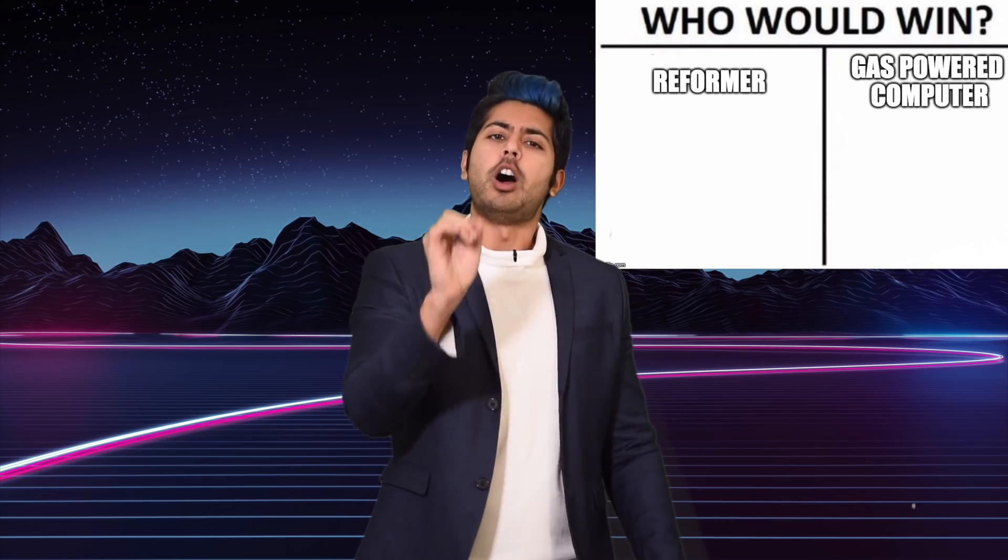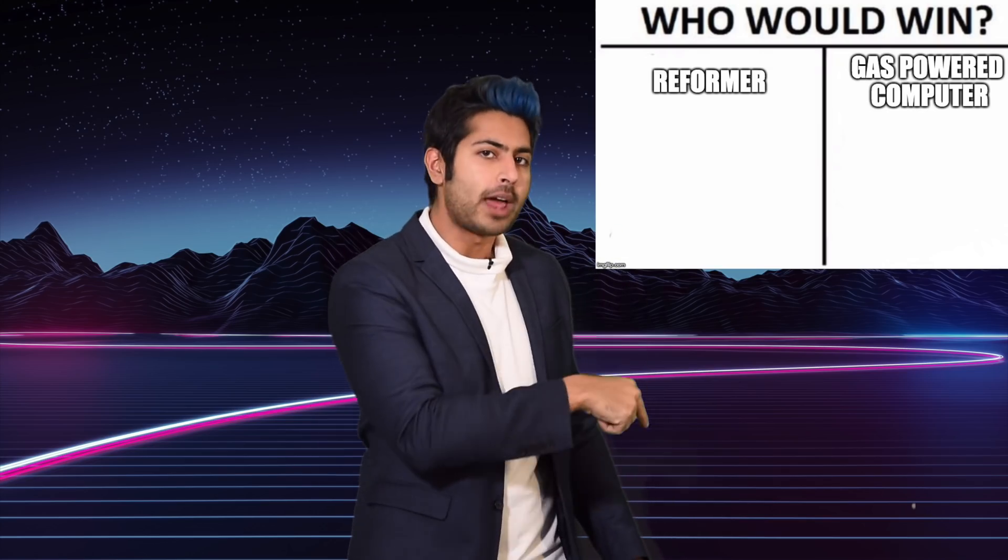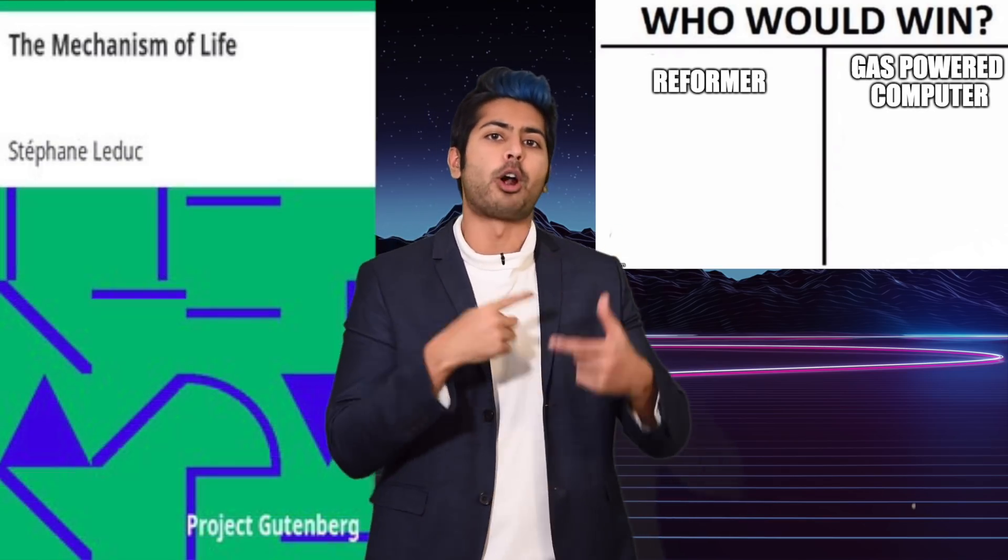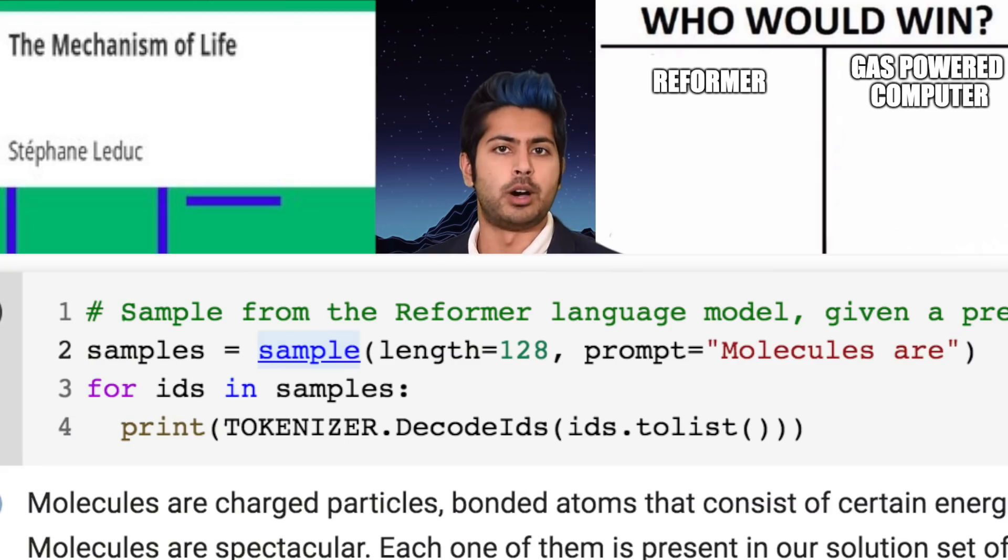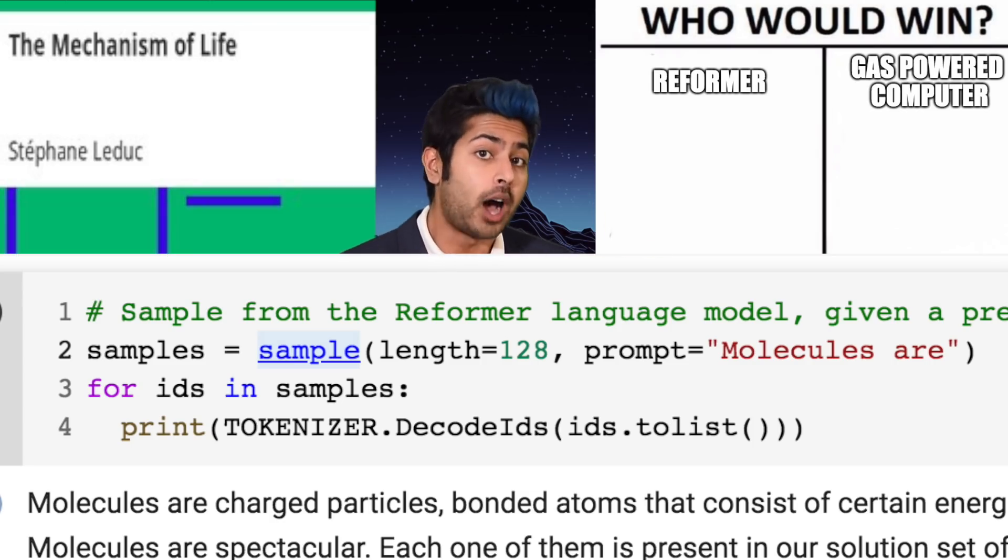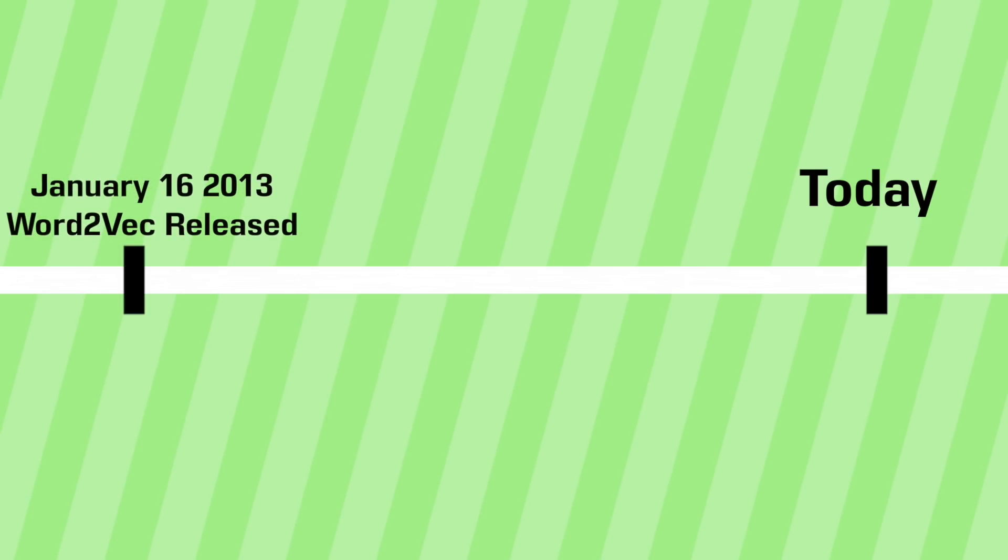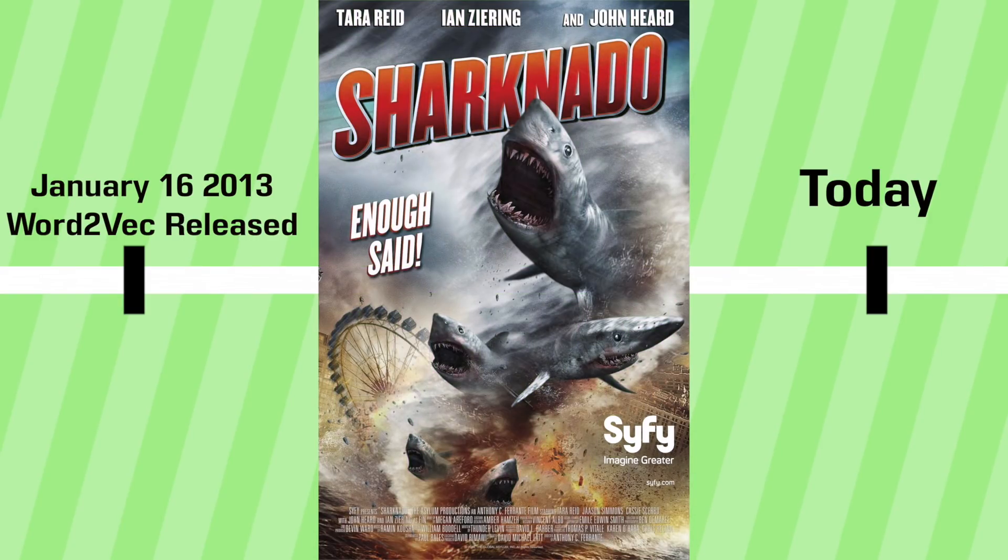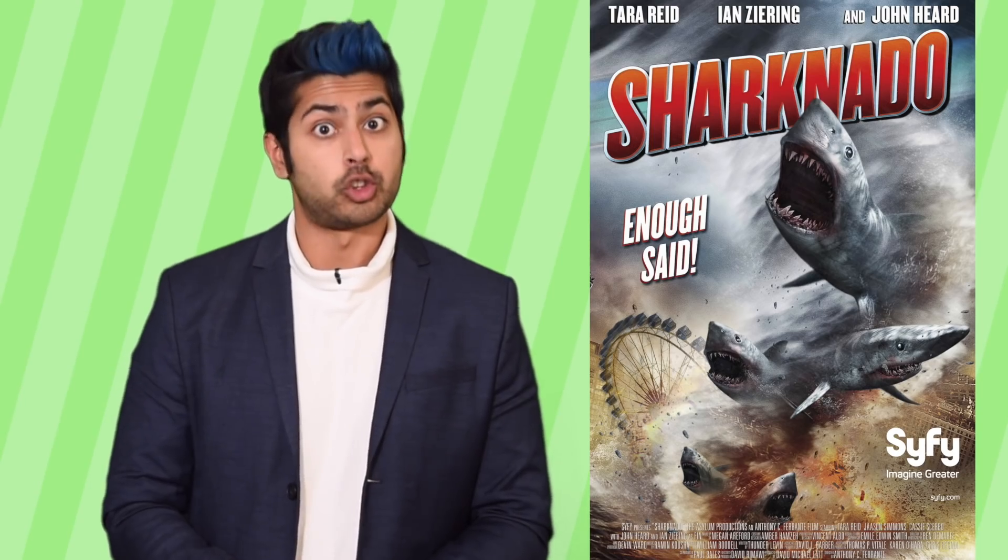In this episode, I'll help you understand what makes the Reformer architecture unique compared to its predecessors, and we'll repurpose Google's simple Python demo to ingest an entire biology textbook and help us answer questions we have about its topics automatically. To truly understand the Reformer's architecture, we've got to wind the clock back to seven years ago. It was 2013, the year the movie Sharknado was released. It's so bad that it's good.